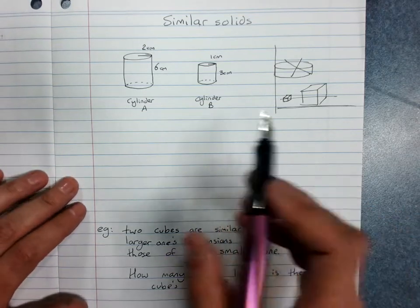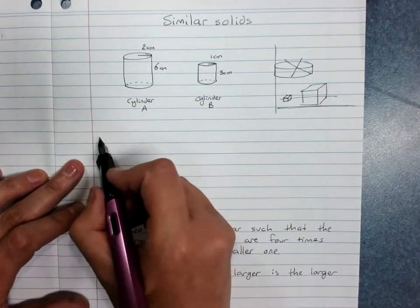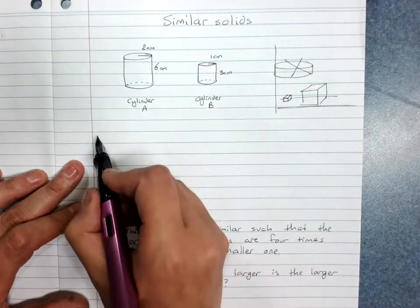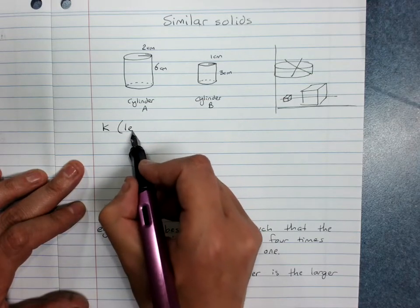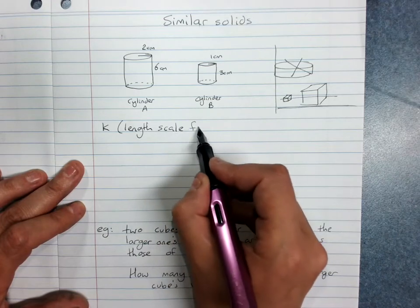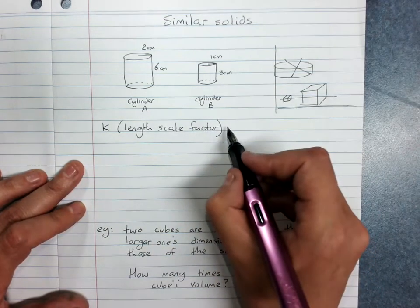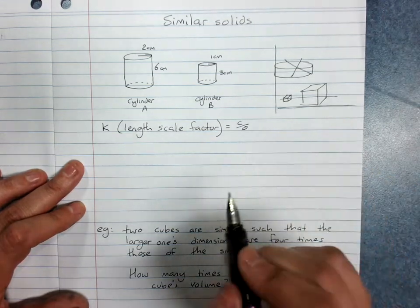Their relationship between the side lengths will be given by k, which is of course the length scale factor. And that is length on the copy divided by length over the original.